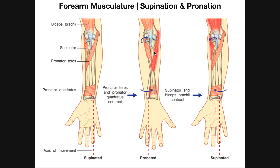When you pronate, there are a couple things to notice. Your ulna really doesn't change positions — in pronation and supination, the ulna is a static bone. The reason is that the olecranon process, the hook on the proximal part of the ulna, locks into the olecranon fossa on the distal posterior part of the humerus, so the ulna really doesn't move. It may angle a little bit, but it doesn't change positions.